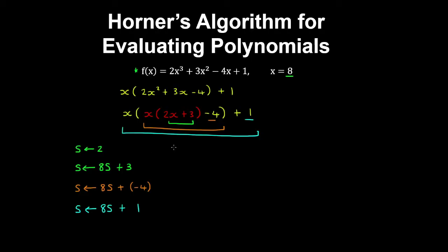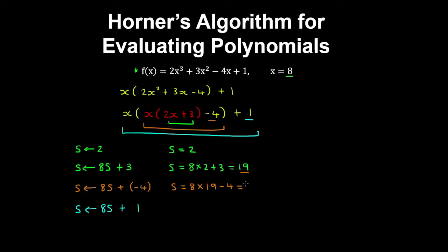We can test if this works. So we have s initially equal to 2. Then s is equal to 8 multiplied by s, which is 2, plus 3, which gives 19. Repeating this, we have s is 8 by the previous result, which is 19, plus negative 4.